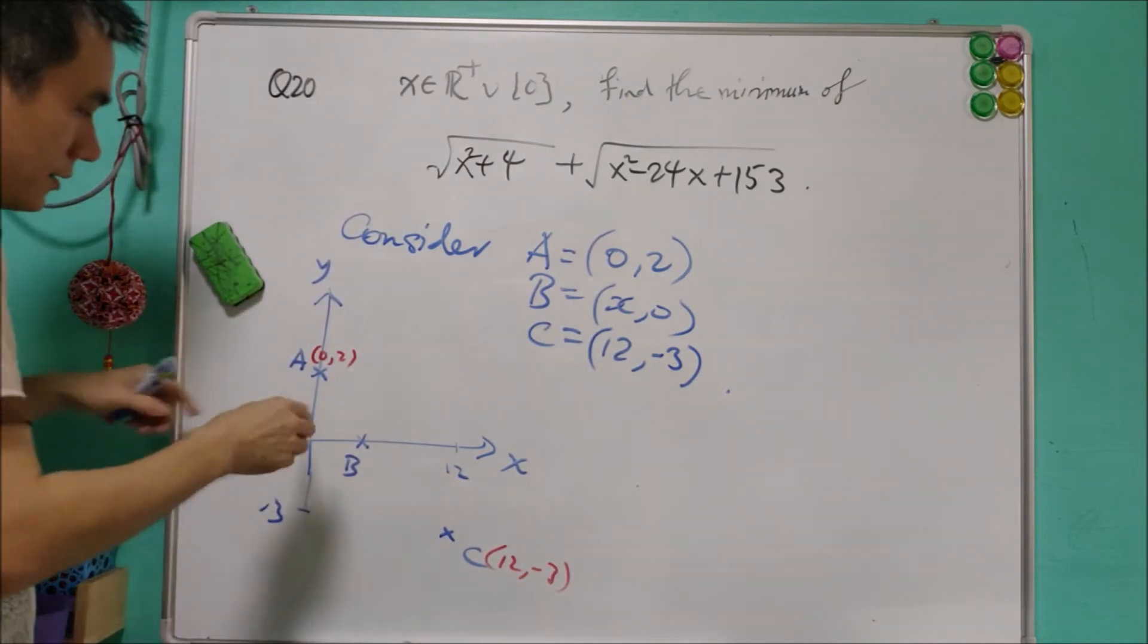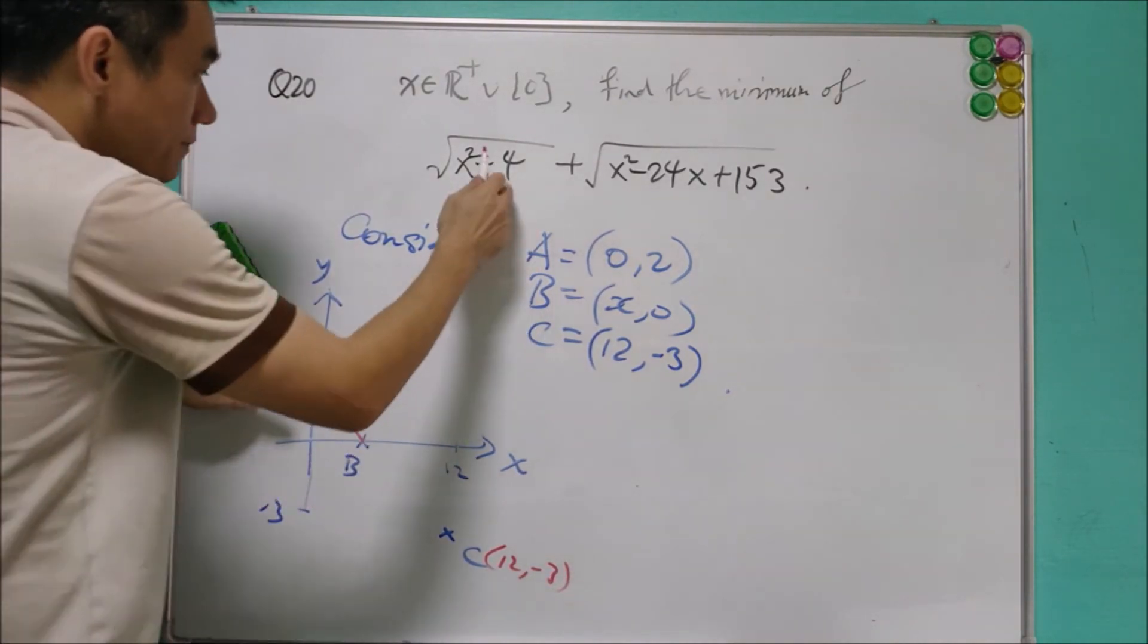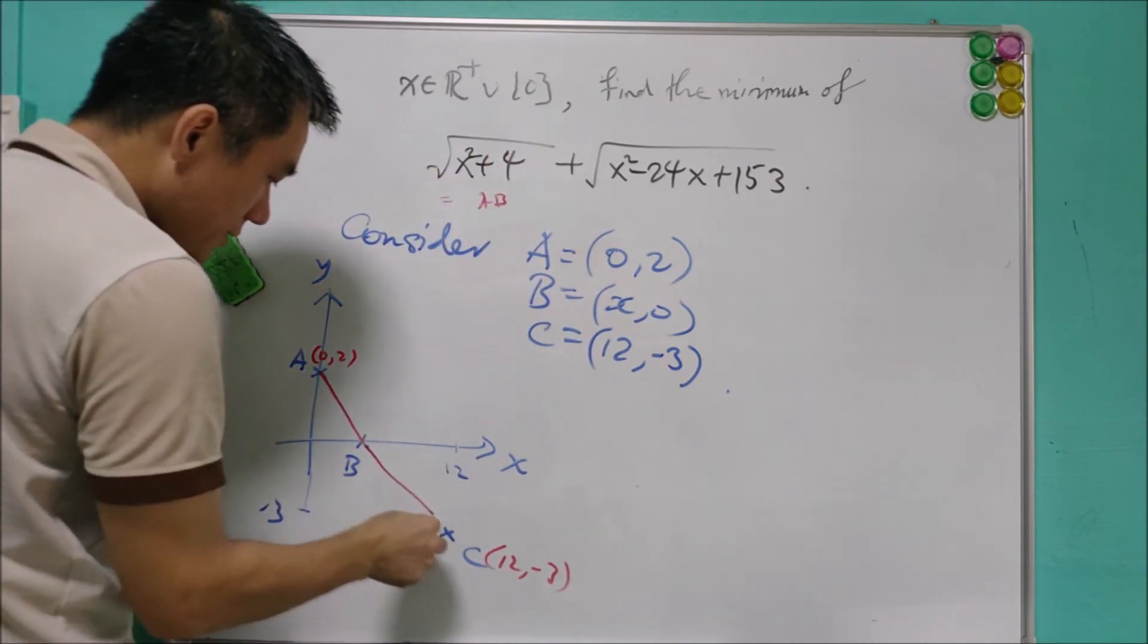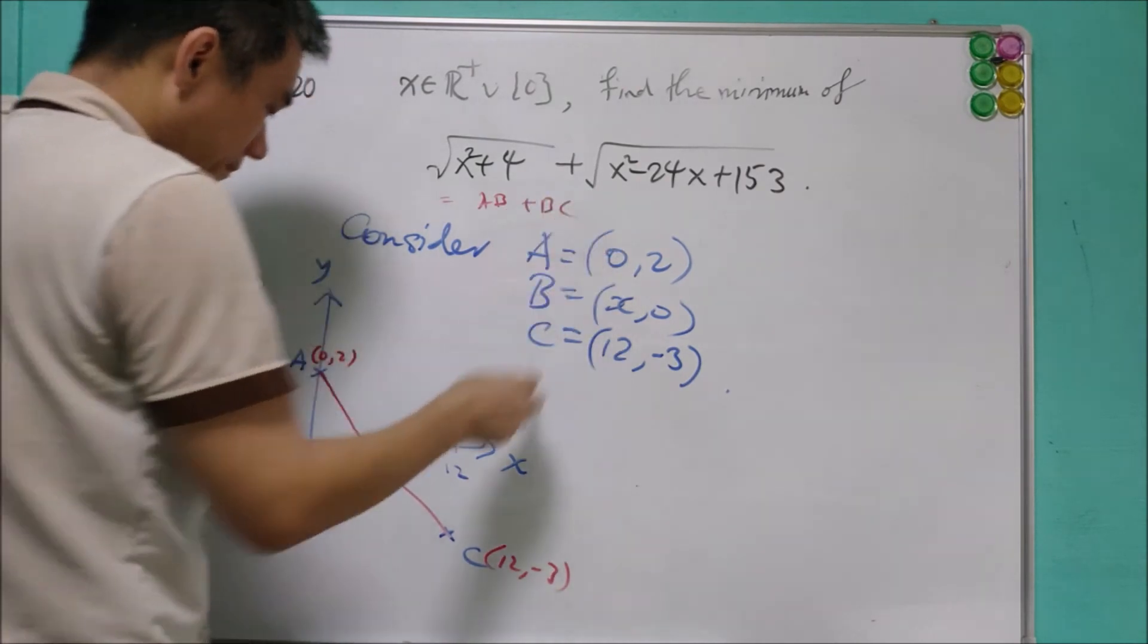Now you can see that this is actually AB. This is AB, length of AB, and this is length of BC, length of BC.